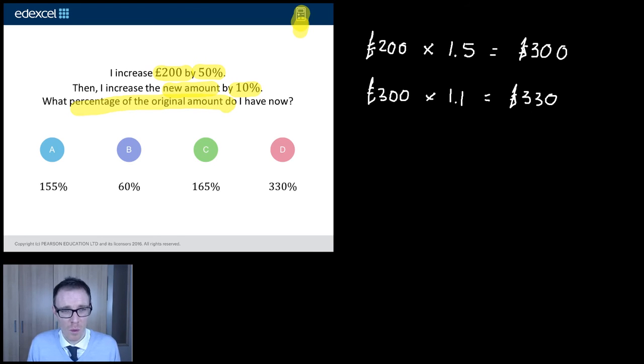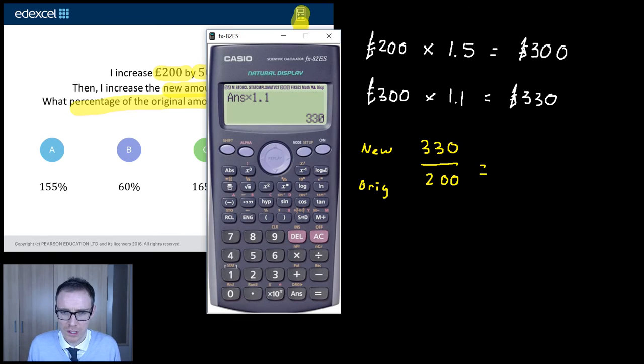Is that my answer? Well, no. What percentage of the original amount do I have now? Flipping heck, the demand in this. So to work out the percentage of an original, what I tend to do is I take my new amount, which is going to be 330, and I divide it by my original amount, which is going to be 200. And that's going to allow me to work out the percentage of the new amount as a percent of the original.